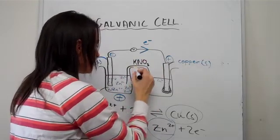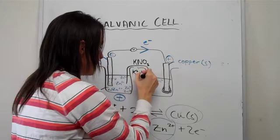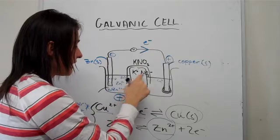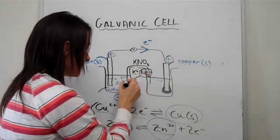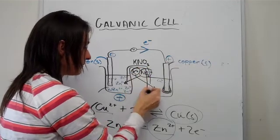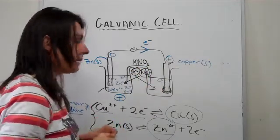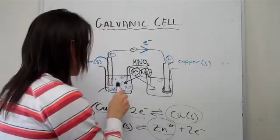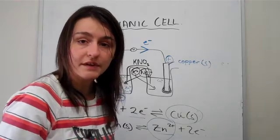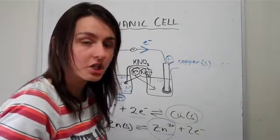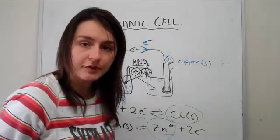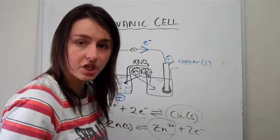A salt bridge has potassium nitrate. Potassium nitrate can be broken down into K plus and NO3 minus. You'll find that the nitrate flows into that beaker and the potassium flows into that beaker there. So what happens is that the half cells' electrolyte solution become neutral, they don't have any charge. That's basically why it's really important to have a salt bridge to prevent polarization, which means that the solution actually changes its charge.